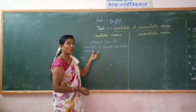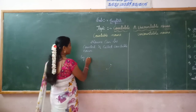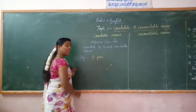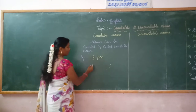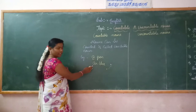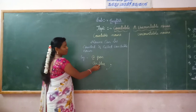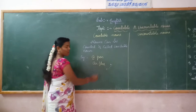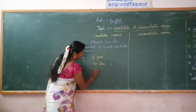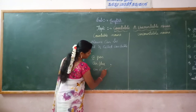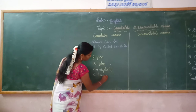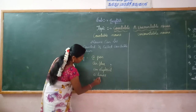Countable nouns are also called Concrete Nouns. For example, we use 'a pen' — how many pens are there? Only one pen, because 'a' refers to one. A pen, an idea. 'An' is an article used at the beginning of a vowel sound. For example: an idea, an elephant, a house, a pot.